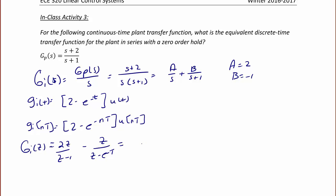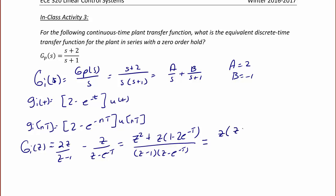When we get a common denominator and collect like terms, this becomes z² + z(1 - 2e^(-T)) over the product of (z - 1) and (z - e^(-T)). This can also be written as z(z + 1 - 2e^(-T)) over (z - 1)(z - e^(-T)).